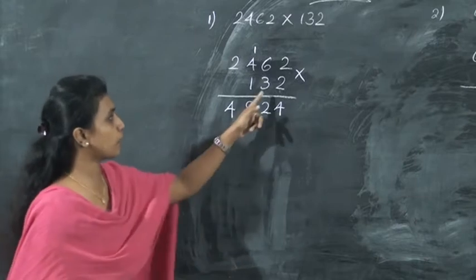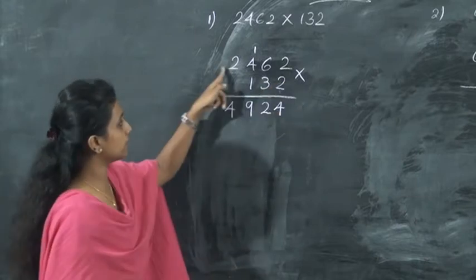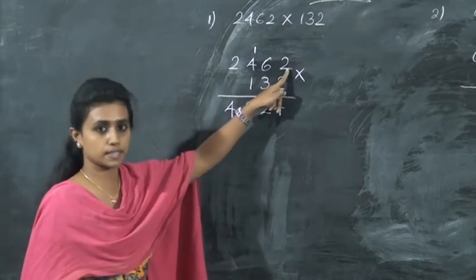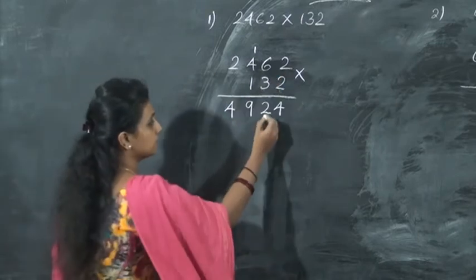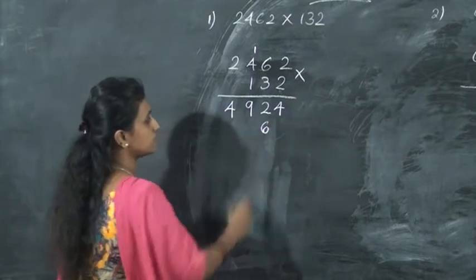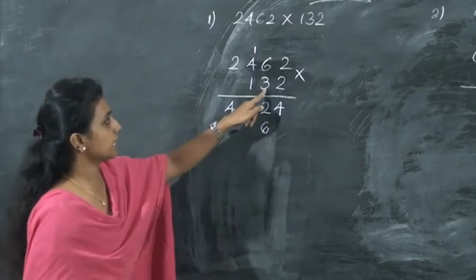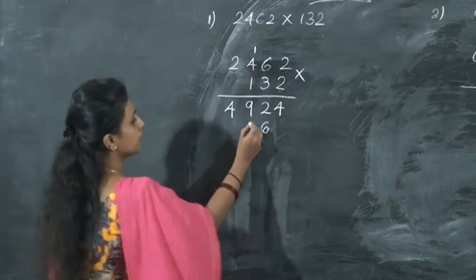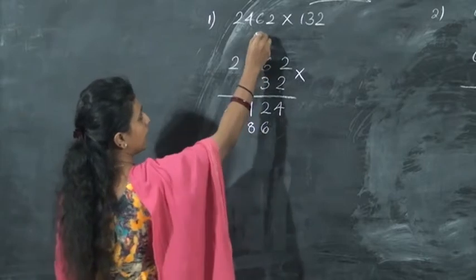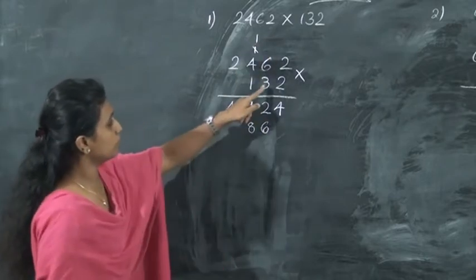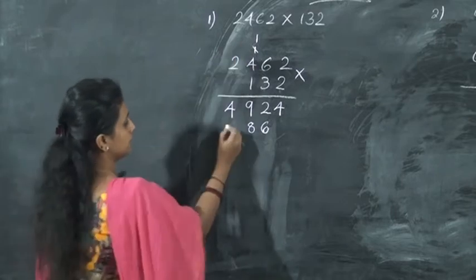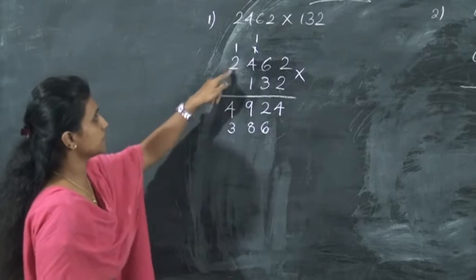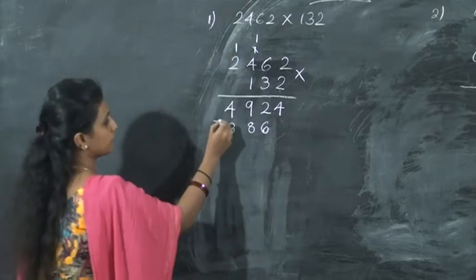Now the next step: you want to multiply this 3 with all these numbers. So 3 twos are 6. Write the answer under the tens place. Then 3 sixes are 18 — write 8 here and 1 is carried over. 4 threes are 12 plus 1 is 13 — write 3 here, carry 1. Then 3 twos are 6 plus 1 is 7.